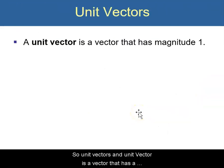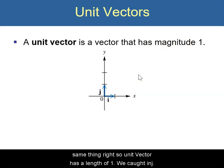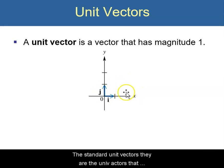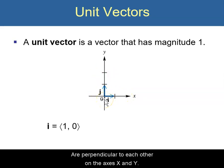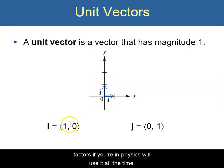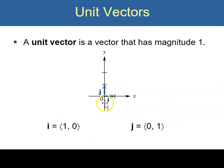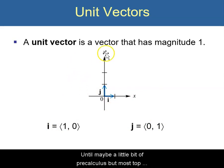A unit vector is a vector that has a length of 1 — remember, magnitude and length are the same thing. We call i and j the standard unit vectors. They are unit vectors that are a distance of 1 and perpendicular to each other on the x and y axes. i = ⟨1, 0⟩ and j = ⟨0, 1⟩. These are very important vectors — if you're in physics you'll use them all the time, and they appear extensively in Calculus 3.